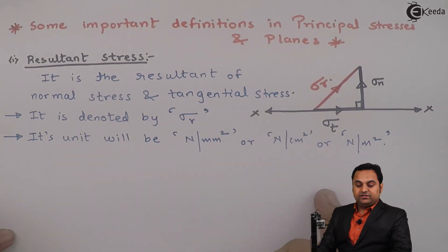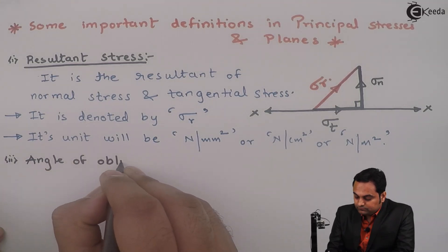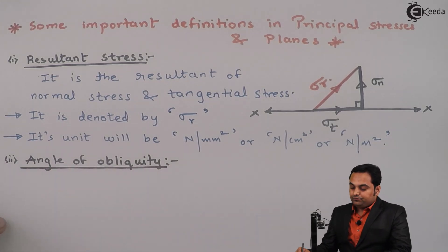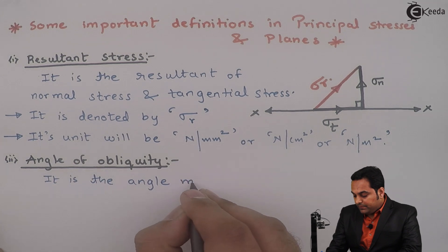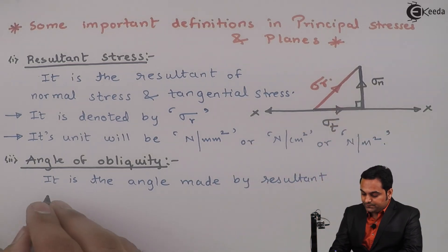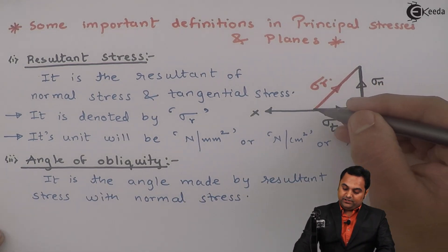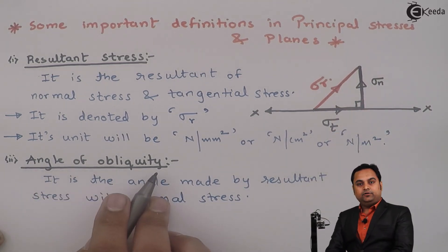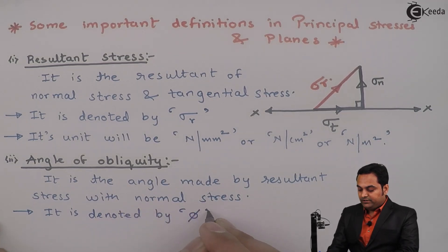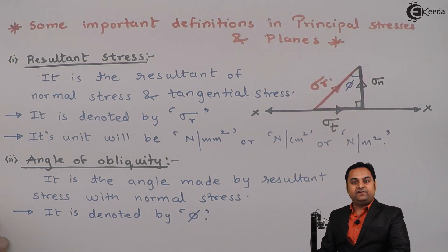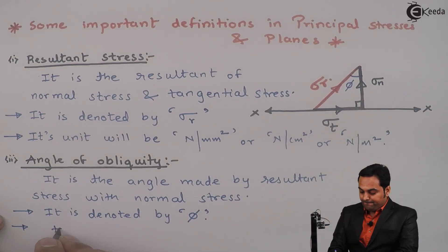After the first definition of resultant stress, the next is angle of obliquity. The angle of obliquity is the angle made by the resultant stress with the normal stress. It is denoted by the letter Phi (Φ). I can mark this on the diagram — this angle Φ is the angle made by the resultant stress with the normal stress.